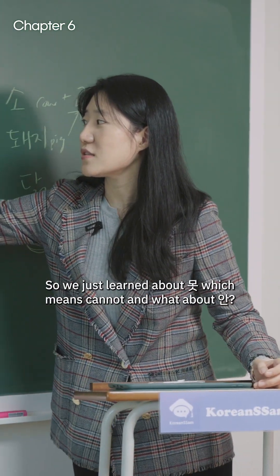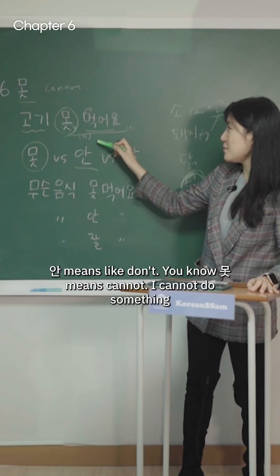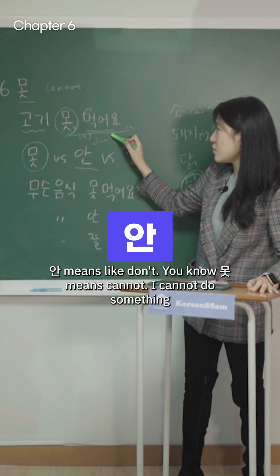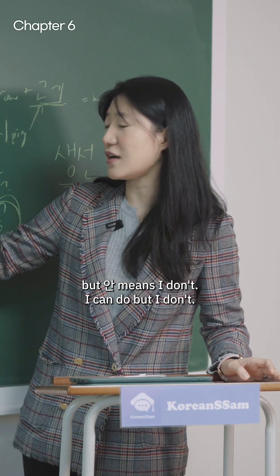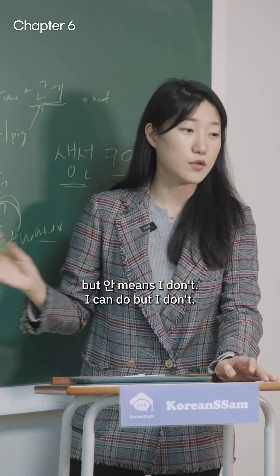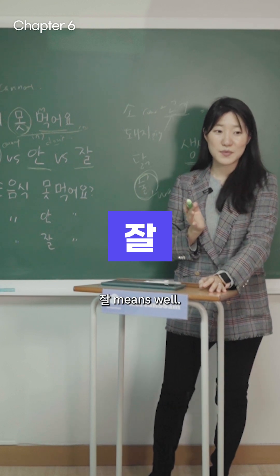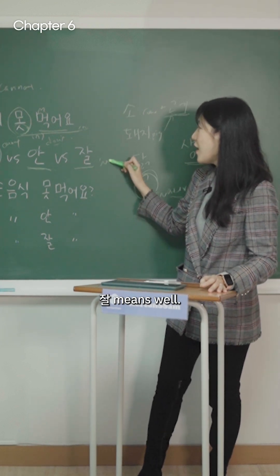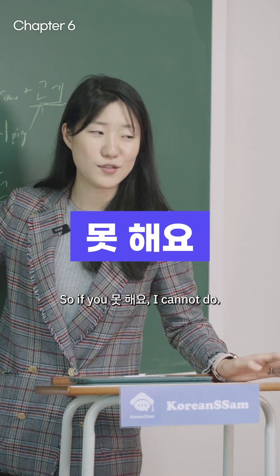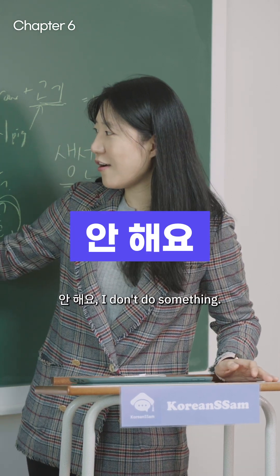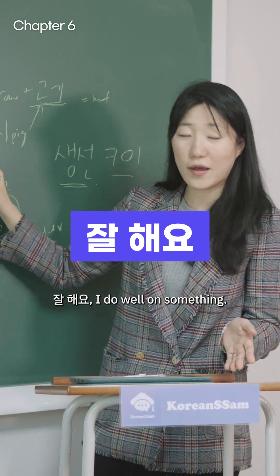So we just learned about 못, which means 'cannot.' What about 안? 안 means 'don't.' 못 means 'I cannot do something,' but 안 means 'I don't' — I can, but I don't. And 잘 means 'well.' So: 못 해요 = I cannot do it; 안 해요 = I don't do something; 잘 해요 = I do well at something.